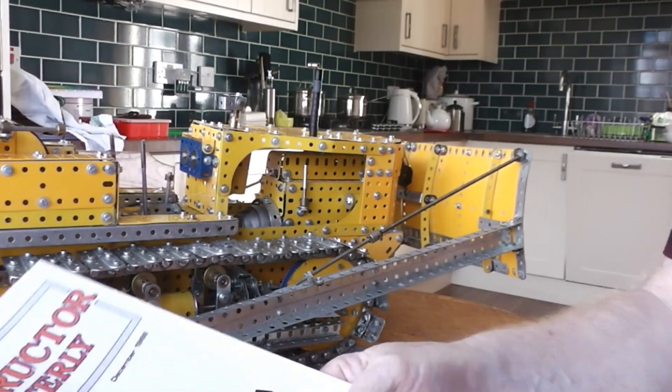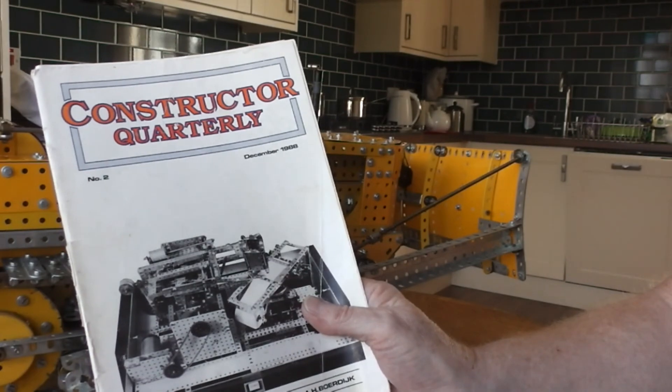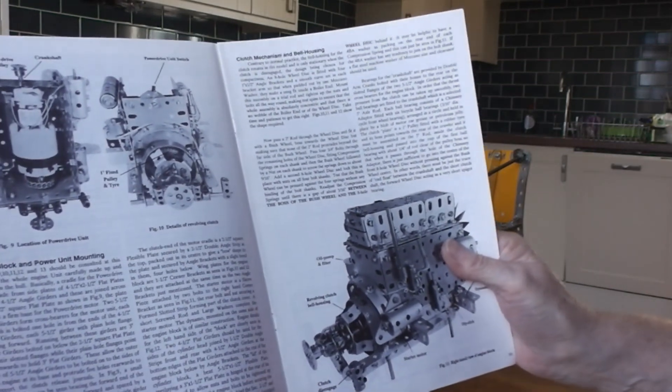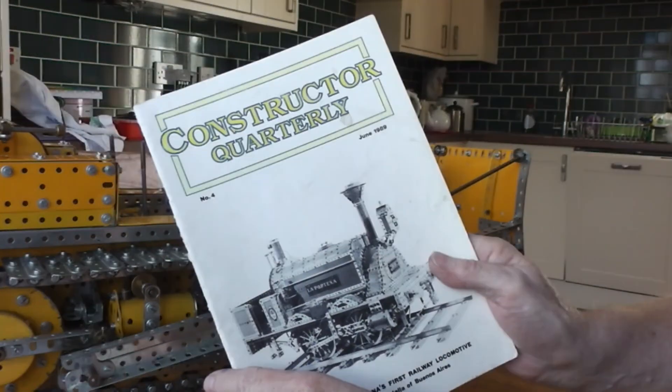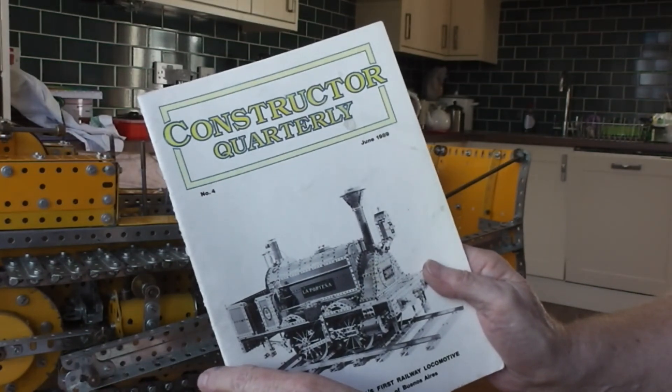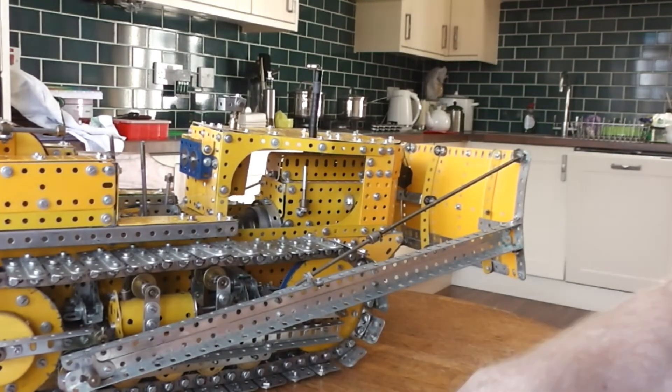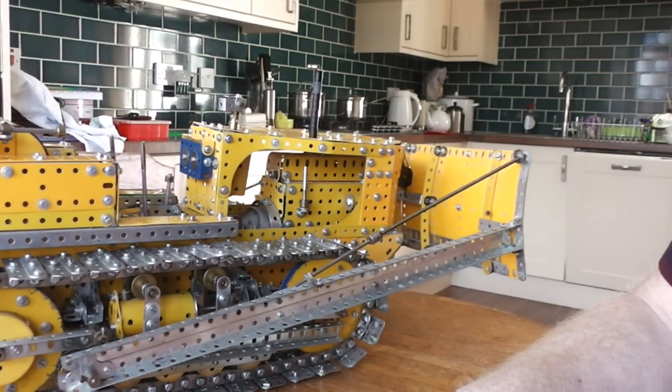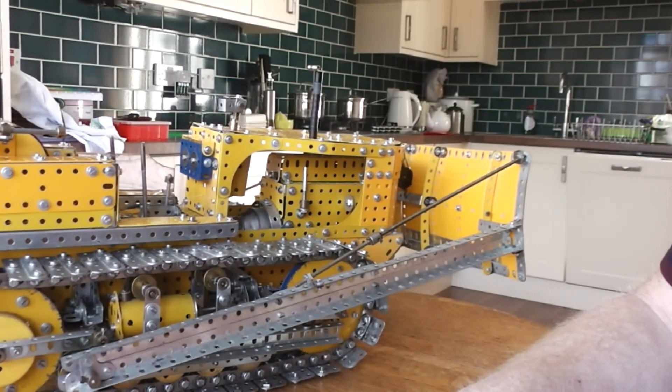First of all, the plans for the model were available in Constructor Quarterly December 1988, March 1989, and June 1989. There's four comprehensive instructions in those three magazines which explain how to build the model, but there's not a comprehensive parts list.